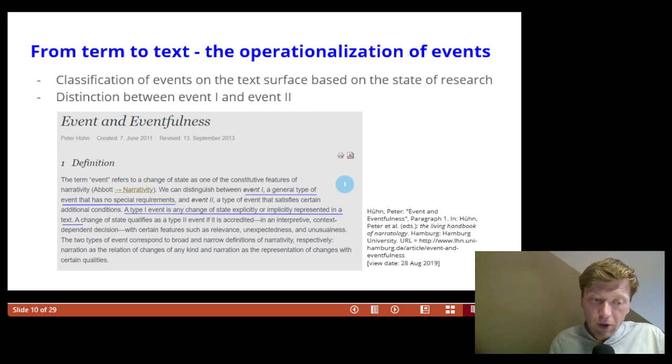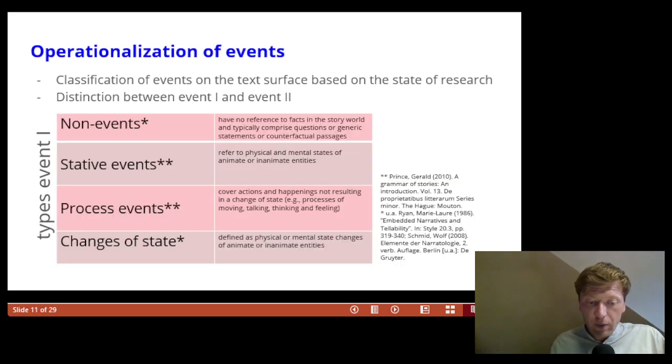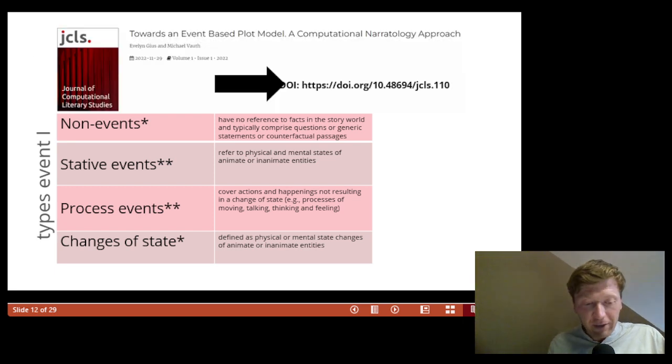Event two, in turn, presents additional interpretive context-dependent characteristics. We distinguish between change of state, process, stative, and non-events, but I will not discuss the different types of events here, but refer to an article by Evelyn Gios and Michael Fout in the Journal for Computational Literary Studies, which explains this in detail.